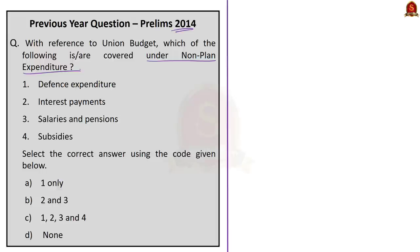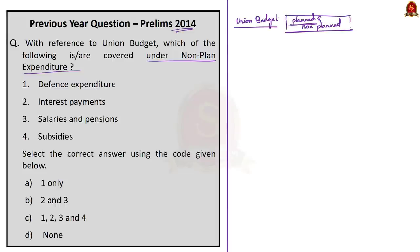The question asks us to find which of the given four statements are covered under non-planned expenditure. UPSC does ask questions like this, and to answer it you must know what a union budget is and what planned and non-planned expenditure are. This is not really a factual question — you can answer it correctly if you know the concept well.